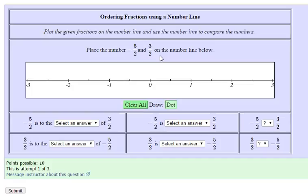First, let's look at the scaling of the number line. It goes from negative 3 to 3. The integers are labeled: negative 3, negative 2, negative 1, 0, 1, 2, 3.